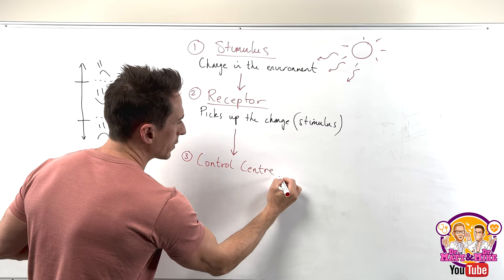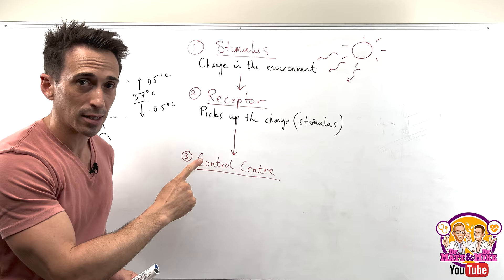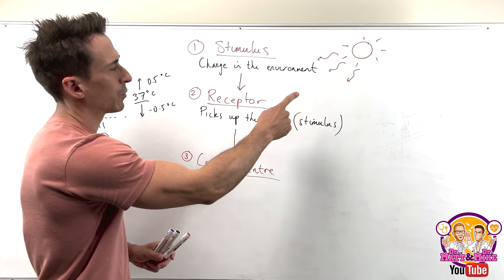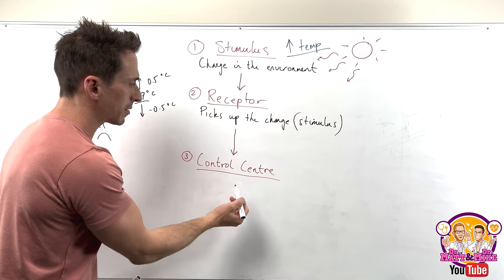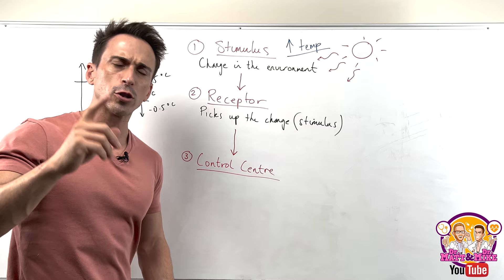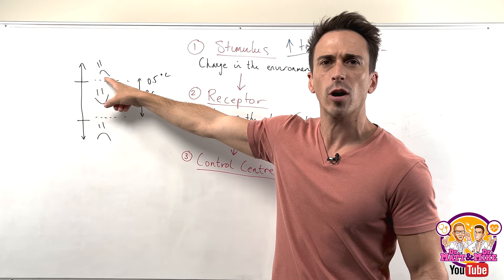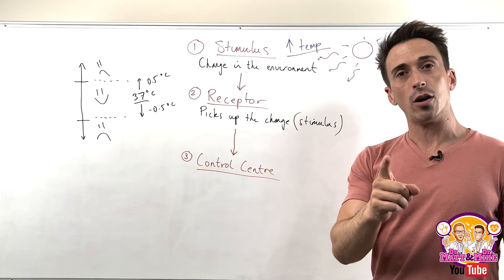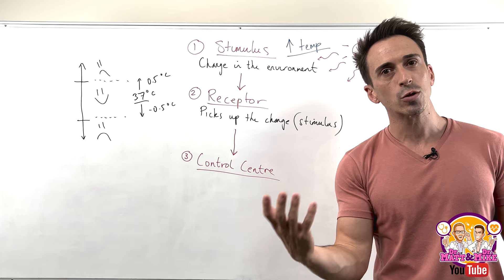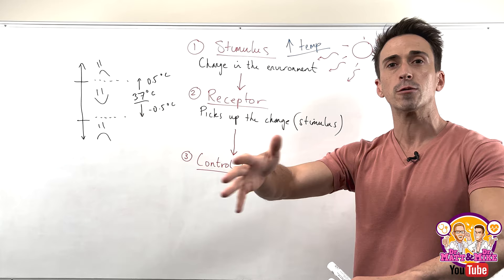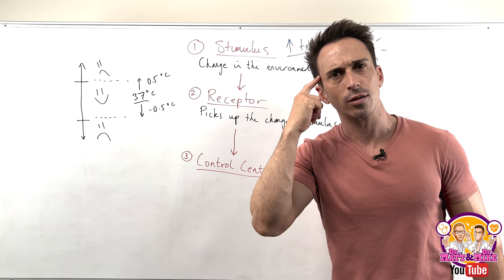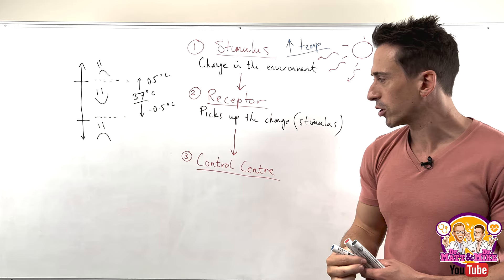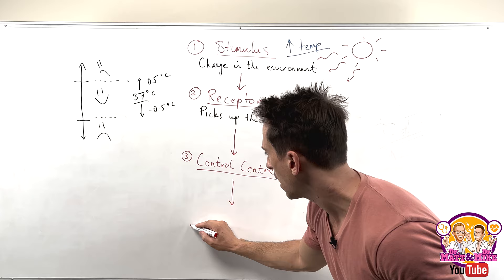There's always a part of the body that takes the information sent by the receptor and decides what to do with it. The stimulus here is an increase in temperature. The receptor picked it up and sent it to the control center, which decides: the temperature has gone above 37 degrees, so I need to bring it back down. It can send a signal to the sweat glands in the skin to sweat. When sweat accumulates on the surface, a breeze through convection can take that heat away from the body, cooling us down.